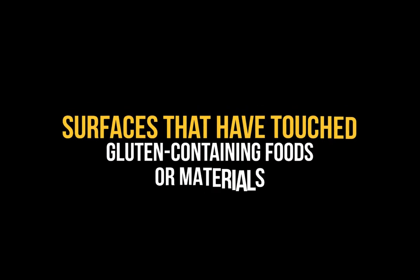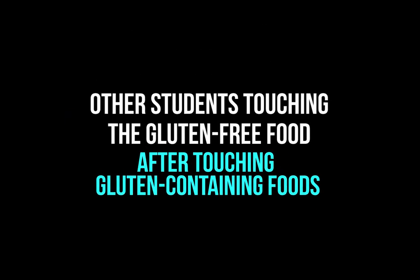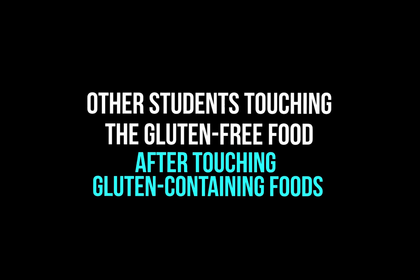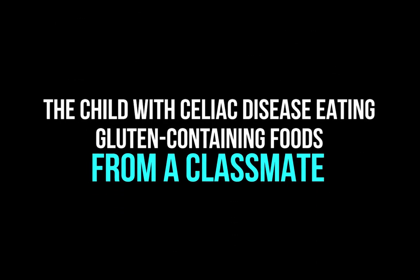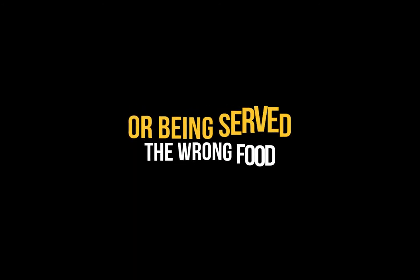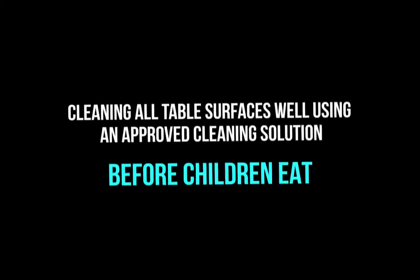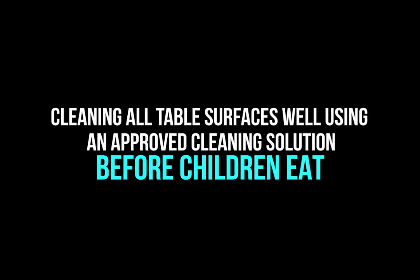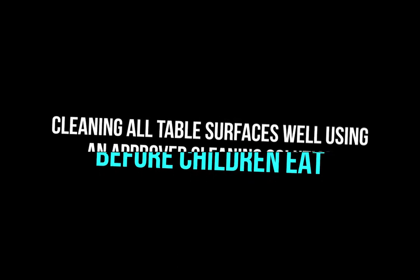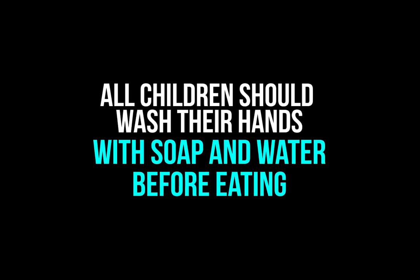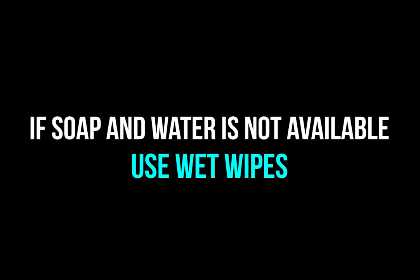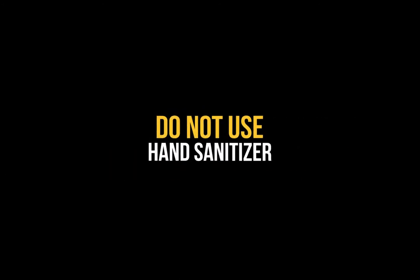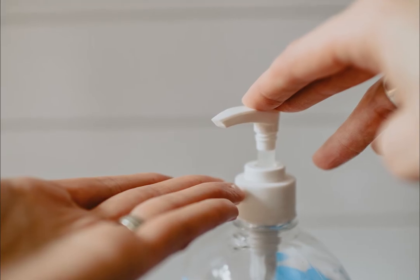There is the risk of cross-contact or ingestion in several places: surfaces that have touched gluten-containing foods or materials, other students touching gluten-free food after touching gluten-containing foods, and the child with celiac disease eating gluten-containing foods from a classmate or being served the wrong food. To prevent ingestion or cross-contact, consider cleaning all table surfaces well using an approved cleaning solution before children eat. All children should wash their hands with soap and water before eating. If soap and water is not available, use wet wipes. Do not use hand sanitizer, as it does not remove gluten.